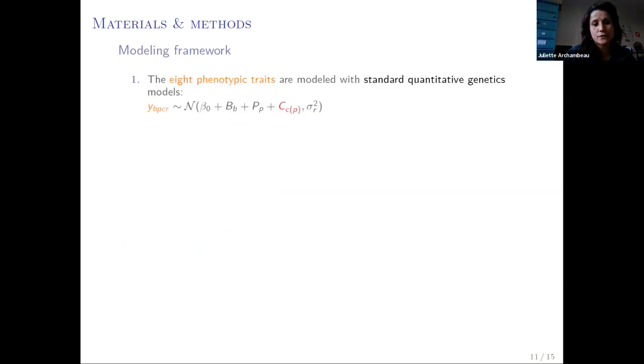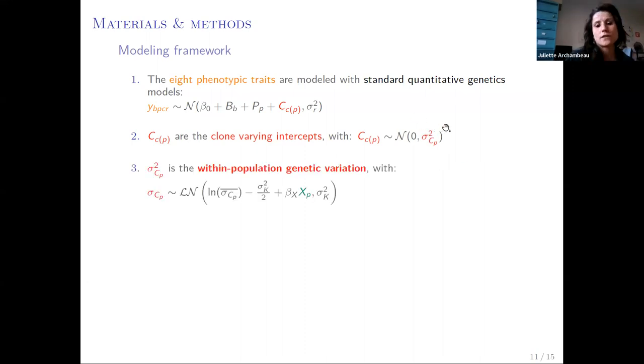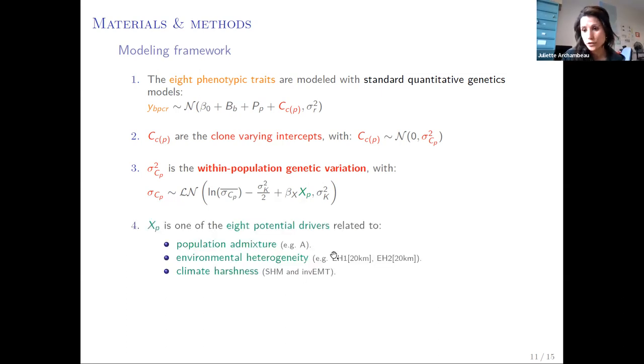The eight phenotypic traits were modeled with standard quantitative genetics models in which the phenotypes are expressed as a function of varying intercepts that account for the common garden design. The varying intercepts of the clones are drawn from a normal distribution of variance sigma squared CP, which is specific to each population, and which stands for the quantitative genetic variation within each population. Sigma CP can then be expressed as a function of XP, where XP is one of the potential drivers: the indexes related to population admixture, environmental heterogeneity, and climate harshness.